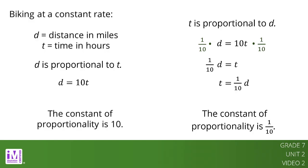This form of the equation is easier to use when we know the distance and want to find out how much time it took, because we can just multiply the distance by 1 tenth. For example, if Kieran biked 15 miles, how long did it take him? Substituting 15 for D, we get T equals 1 tenth times 15. So the time it took is 1.5 hours.